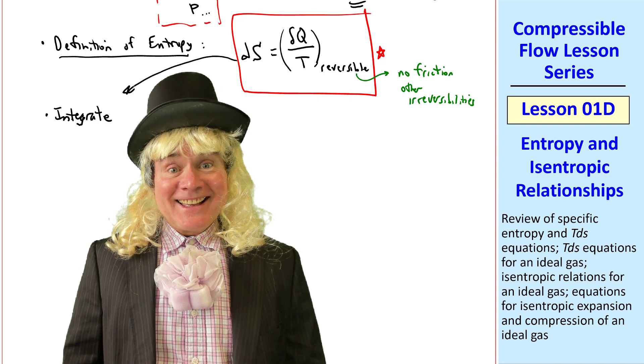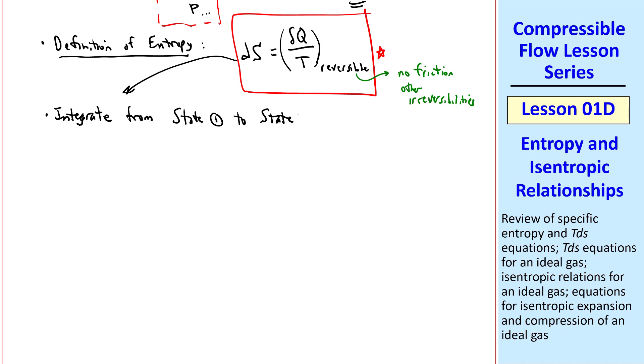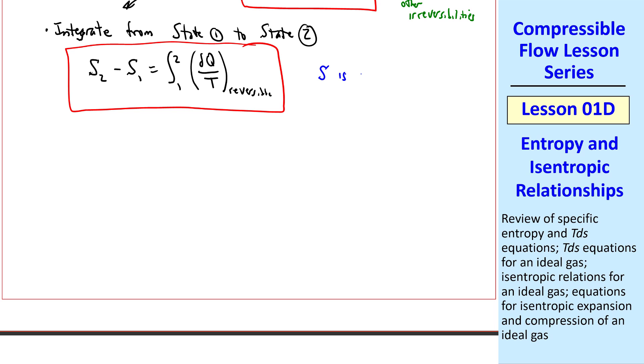Let's integrate this equation from some state 1 to some other state 2. We get S2 minus S1 equal integral from 1 to 2, delta Q over T, reversible. And note that we are allowed to say S2 minus S1, since entropy S is a state property, like other state properties: temperature, pressure, density, etc.